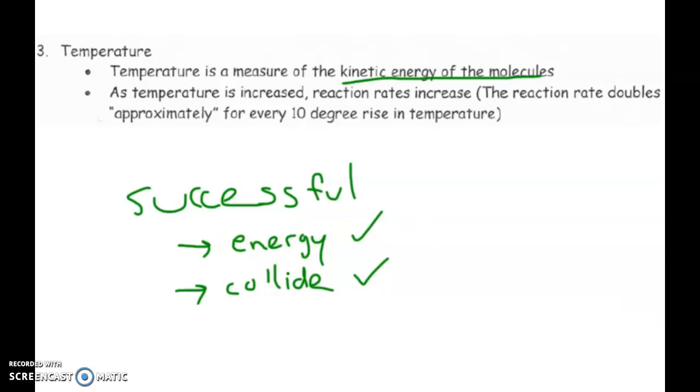So how temperature can affect a successful collision is it basically will increase the amount of energy that those particles have. So when they do collide, they'll have hopefully enough energy for that to now be a successful collision.